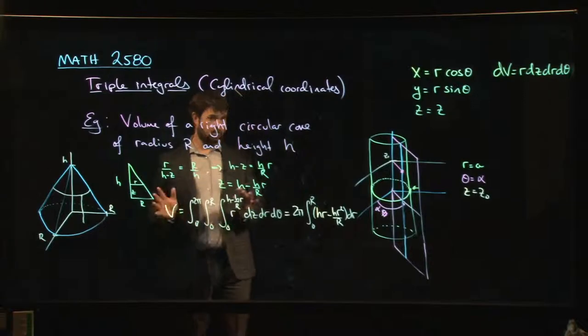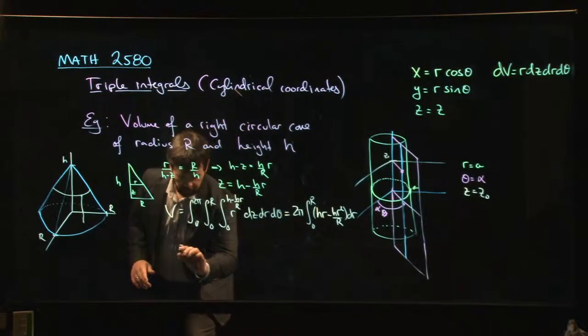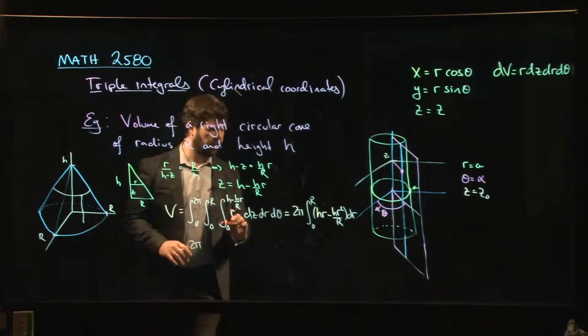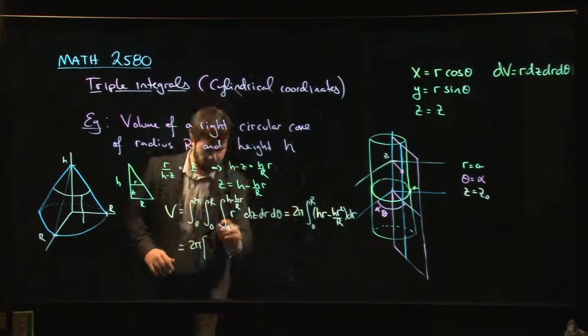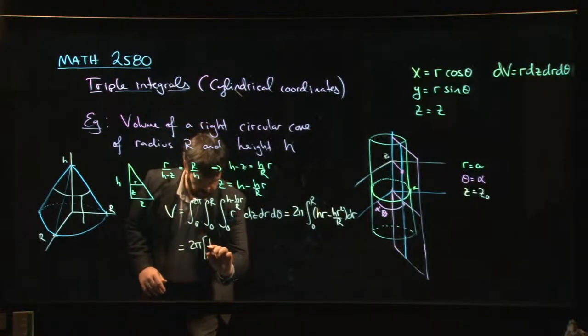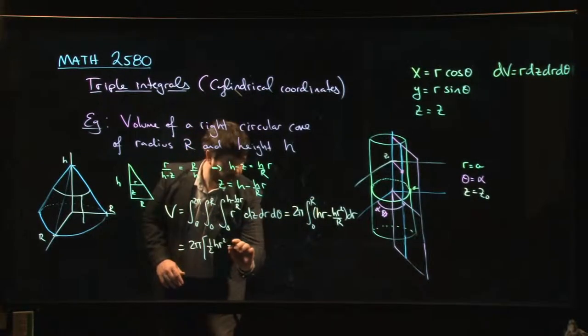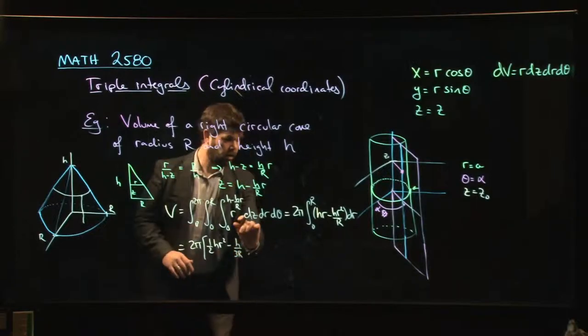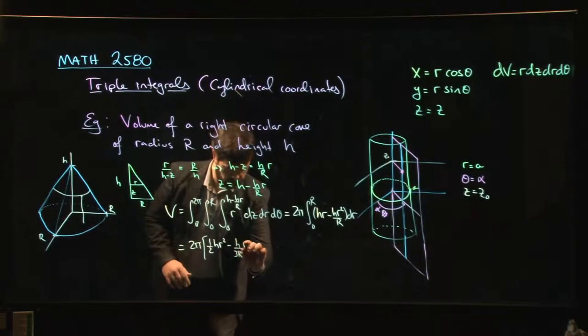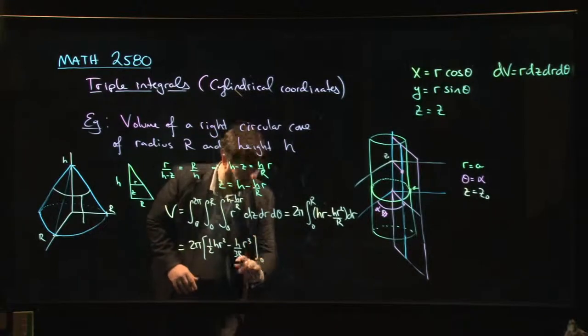Now I integrate, which is not so bad. I get 2π times, let's see, in the first one, one half HR squared, and in the second one I have H over 3R times R cubed.